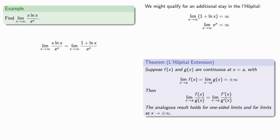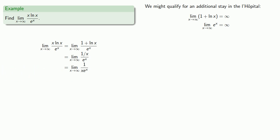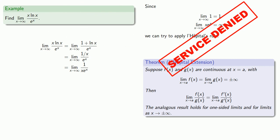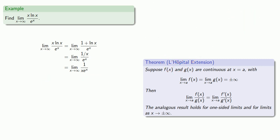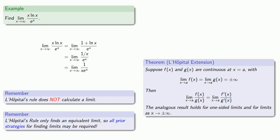Since numerator and denominator both go to infinity, we can stay in the L'Hospital and apply L'Hôpital's rule once again. After algebraic cleanup, we might try to apply L'Hôpital's rule a third time, but we can't — the limit of the numerator is not infinity. It's very important to remember that L'Hôpital's rule does not find a limit, so all prior techniques are still applicable. We need to find the limit as x goes to infinity of 1 / (x · e^x).